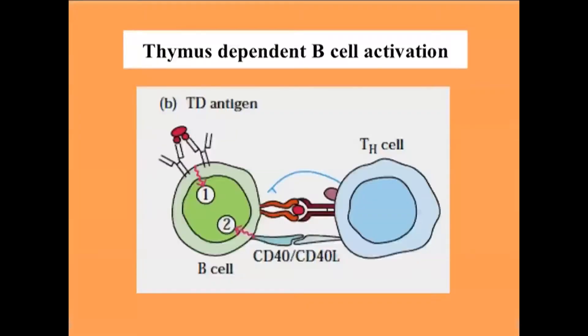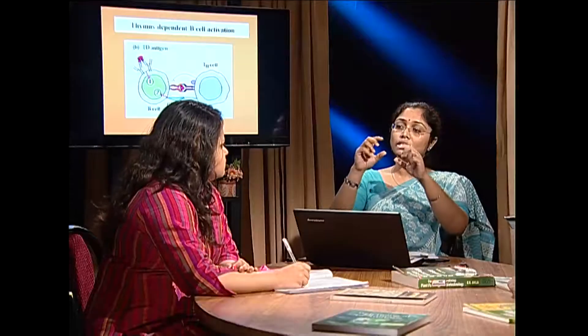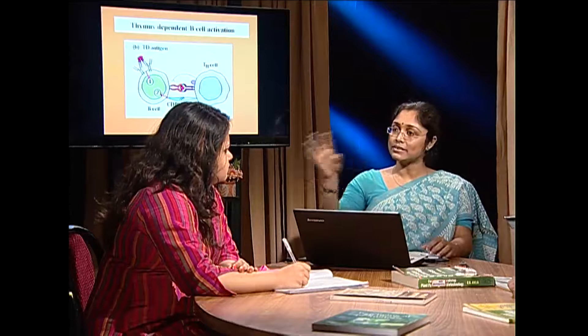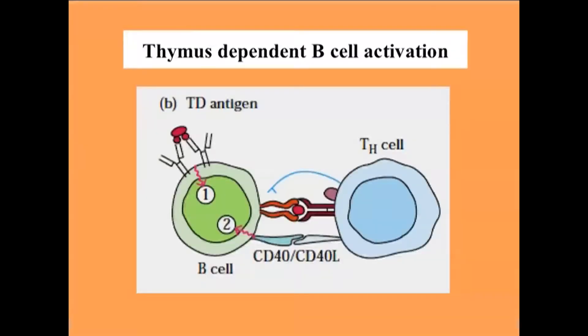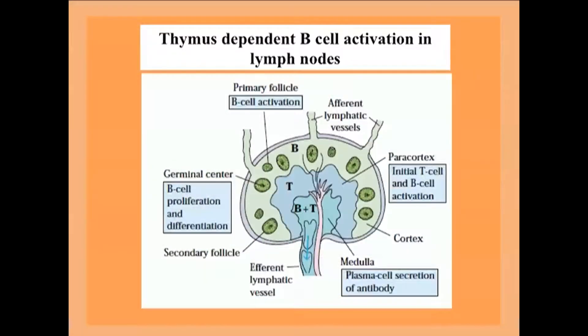In thymus-dependent B-cell activation, the B cell needs direct help from TH cells as well as cytokines released from TH cells. The B-cell receptor first binds to an antigen, internalizes and processes it, then presents it on its surface. The TH cell, using its T-cell receptor, recognizes the foreign peptide presented by MHC molecules. On recognizing it, the TH cell gets activated and secretes cytokines, which then activate the B cell. The B cell is then converted into plasma cells and memory cells. This process takes place in secondary lymphoid organs like lymph nodes.